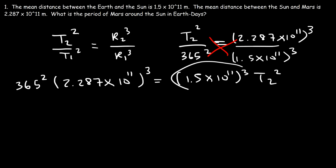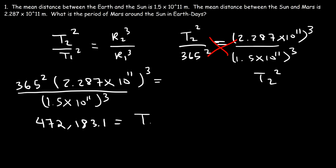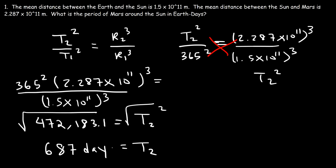Evaluating the left side gives T₂² ≈ 472,183.1. Taking the square root of both sides, T₂ ≈ 687 days. That's how long it takes Mars to orbit the Sun — one year on Mars is 687 Earth days.